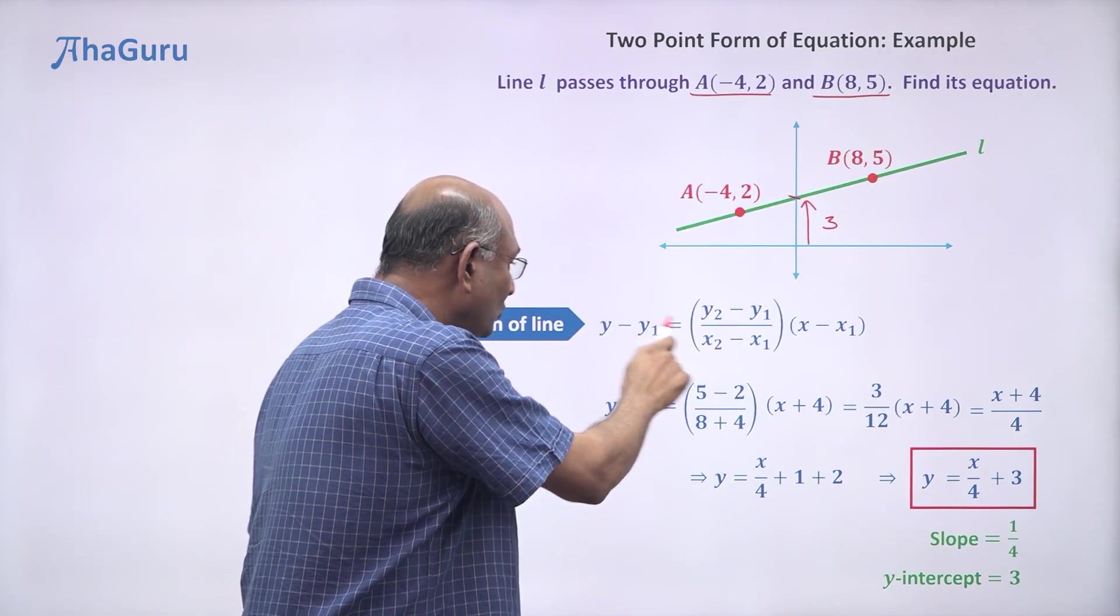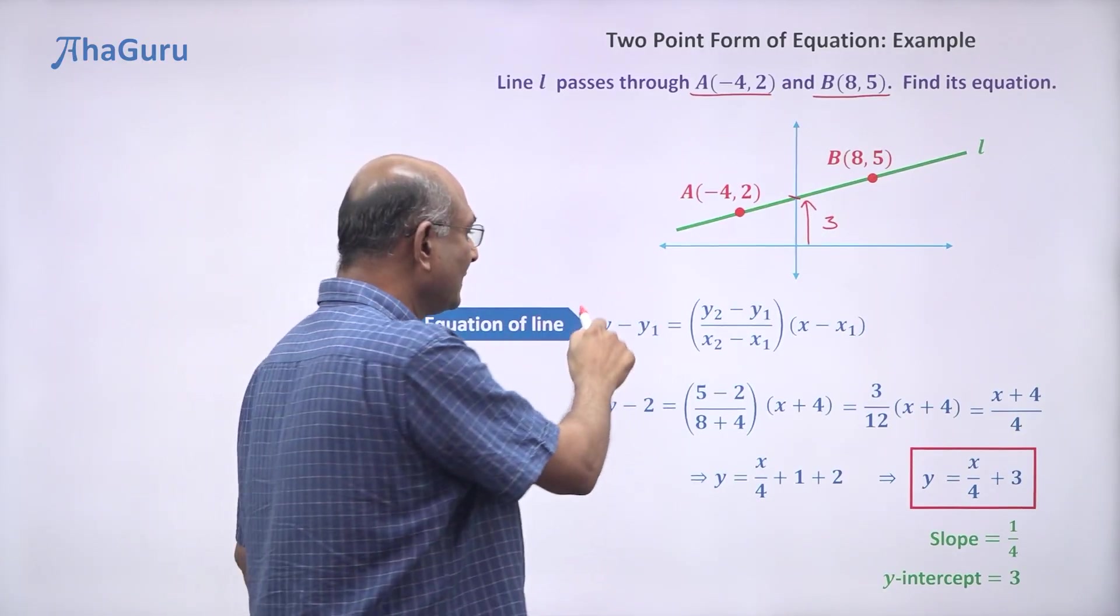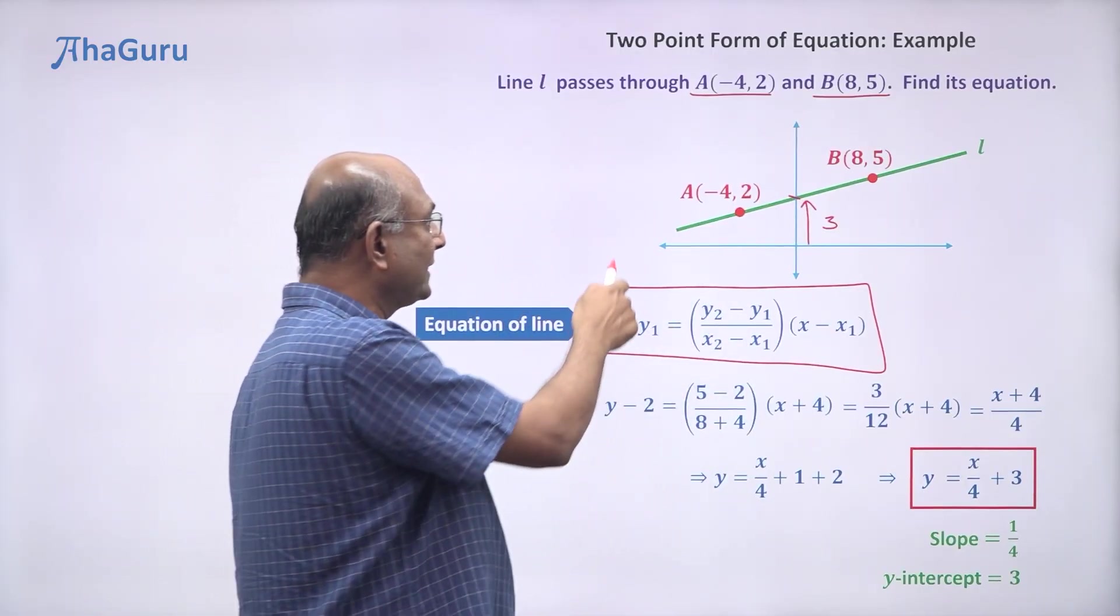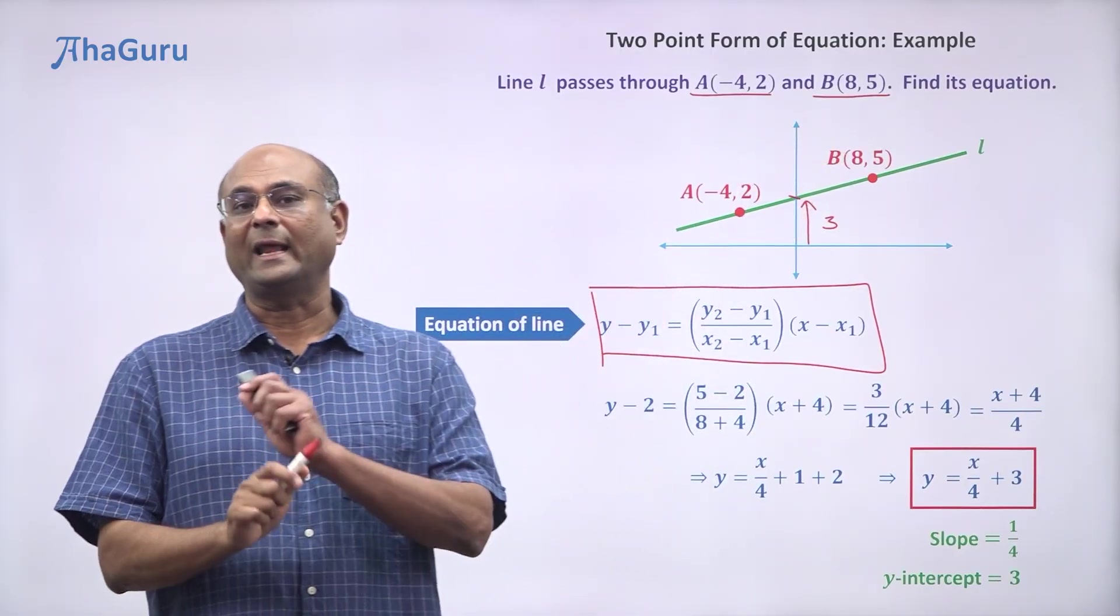Anyway, the two-point form of the equation, this is the two-point form of the equation. This allows us to directly calculate the equation of the line.